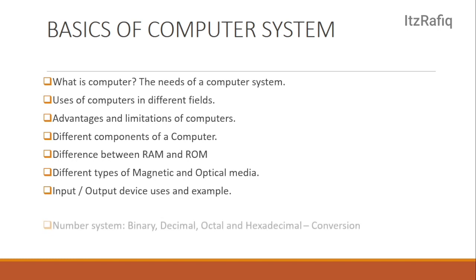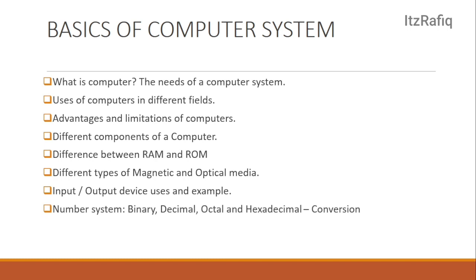After that comes the number system. From the number system, see the base of all number systems: binary has base 2, decimal base 10, octal base 8, hexadecimal base 16. Also see the symbols used in each number system: binary uses only 0 and 1; decimal 0 to 9; octal 0 to 7; and hexadecimal 0 to F (0 1 2 3 4 5 6 7 8 9 A B C D E F). See the conversions — binary to decimal, decimal to binary, octal to decimal, octal to binary, hexadecimal, and so on. For binary-decimal conversion, you multiply by 2 or divide by 2; for octal it's 8, and for hexadecimal it's 16.